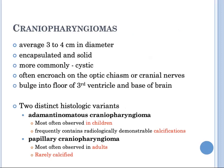Morphologically, craniopharyngiomas average 3 to 4 cm in diameter. They may be encapsulated and solid, but more commonly are cystic and sometimes multiloculated. They often encroach on the optic chiasm or cranial nerves and may bulge into the floor of the third ventricle and the base of the brain. Craniopharyngiomas have two distinct variants: the adamantinomatous craniopharyngioma, often observed in children and frequently containing radiographically demonstrable calcification, and the papillary craniopharyngioma, most often observed in adults and rarely calcified.